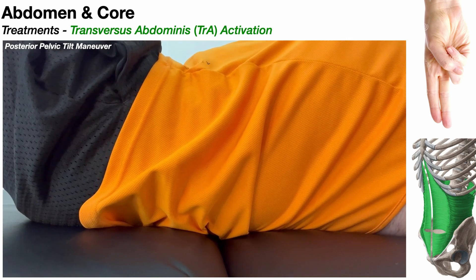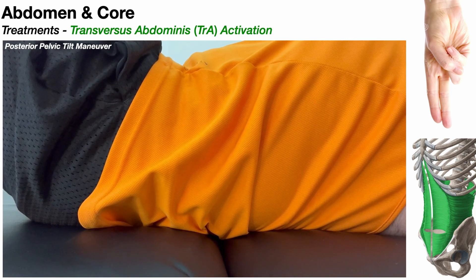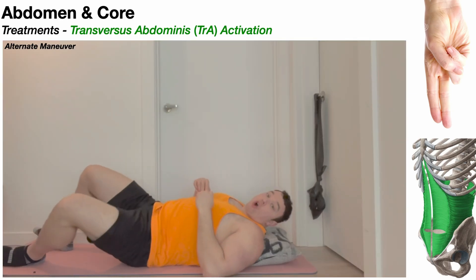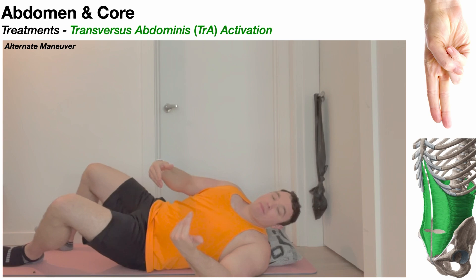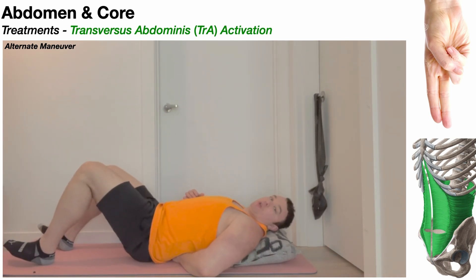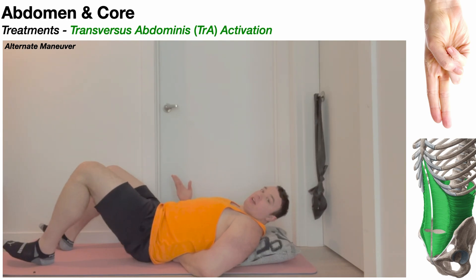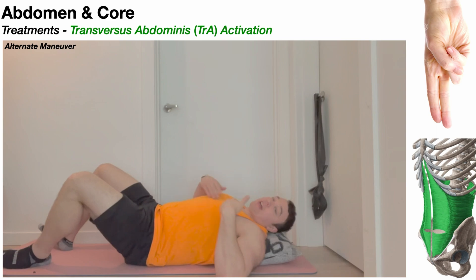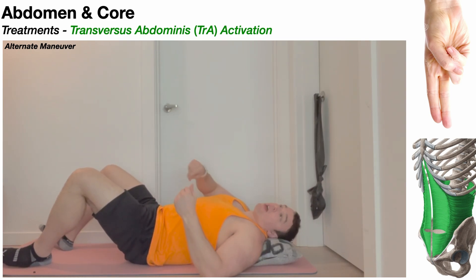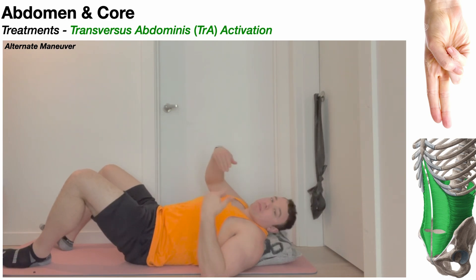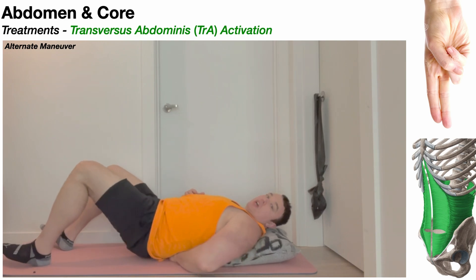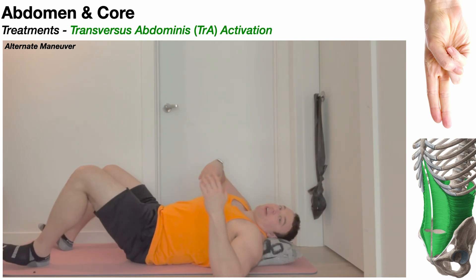This posterior pelvic tilt method is not ideal, but it is a way to get that muscle to contract, even though some other muscles will help out. If the patient still can't activate the TRA through the drawing-in maneuver or the posterior pelvic tilt, you need another method. This next one is not very specific for the transversus abdominis, but it tends to get some activation, which may lead to some strengthening and better motor control, eventually progressing to the other methods.